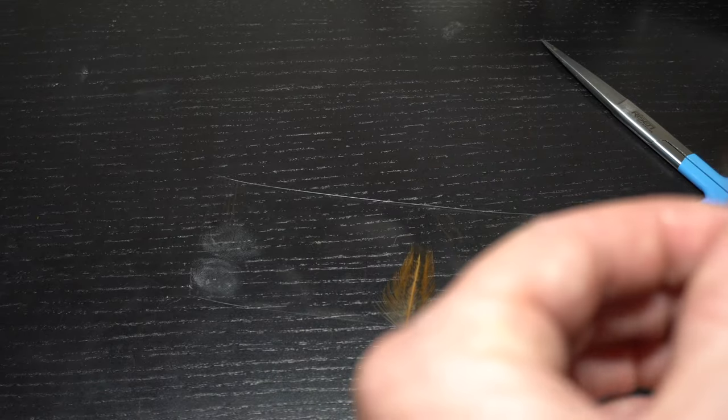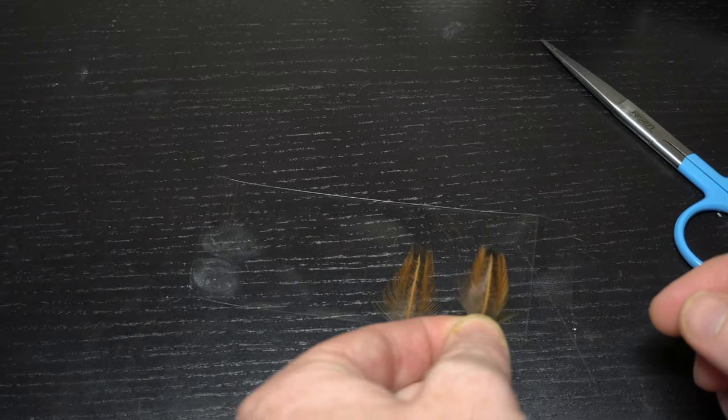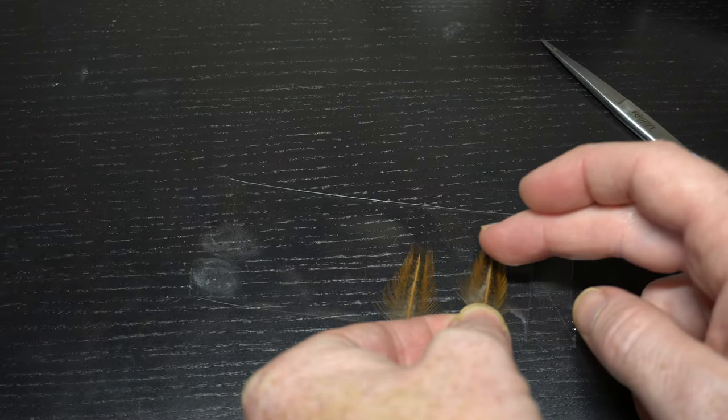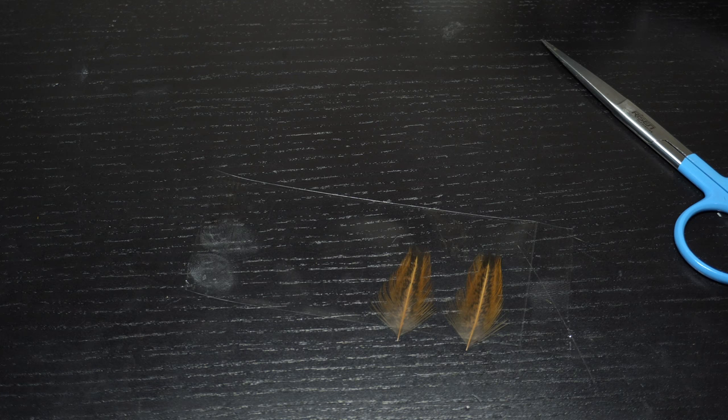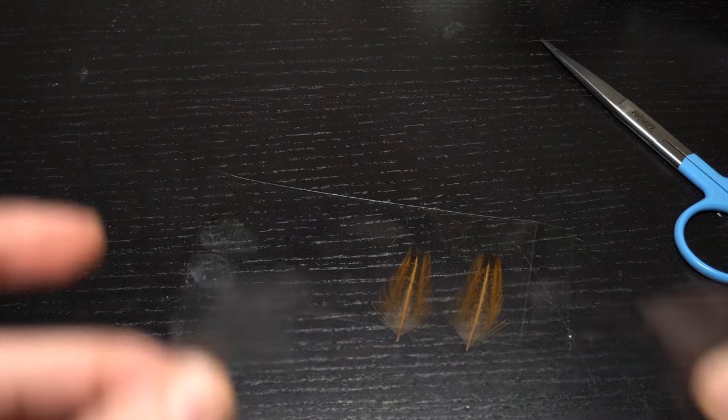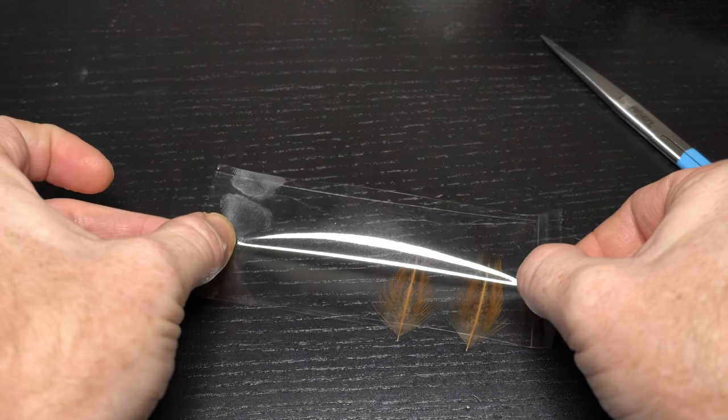I'm just going to do two here. Again, like I said, you can make more or less. Just drop straight down, there we go. Just grab another piece of tape, lay it right on top. Make sure it doesn't have any creases, and there we go.